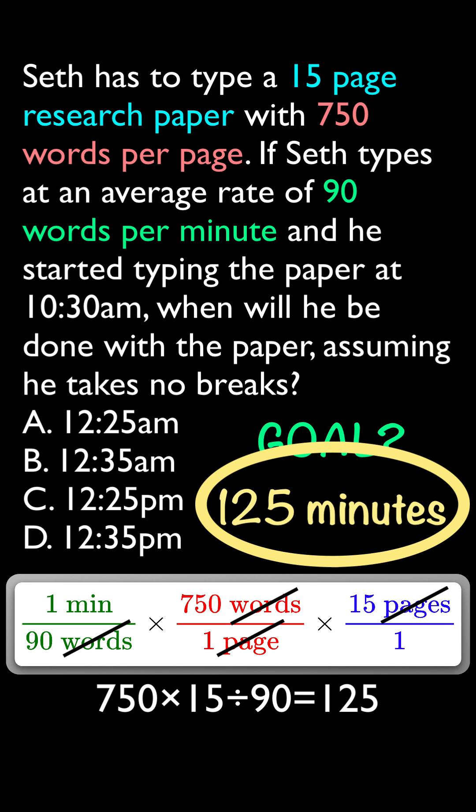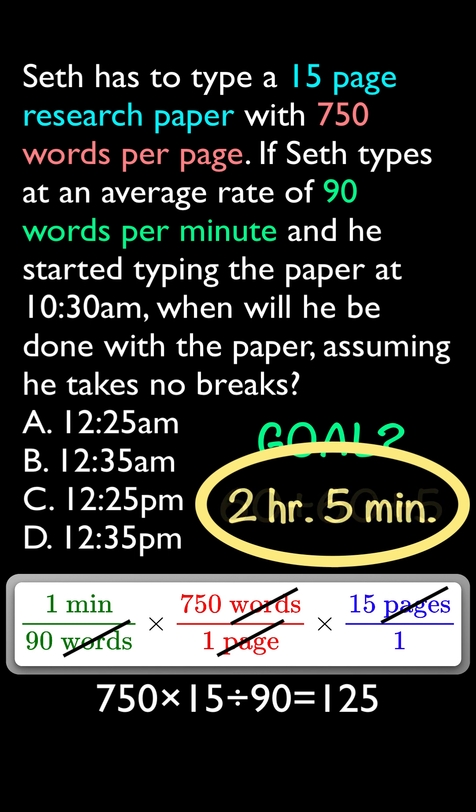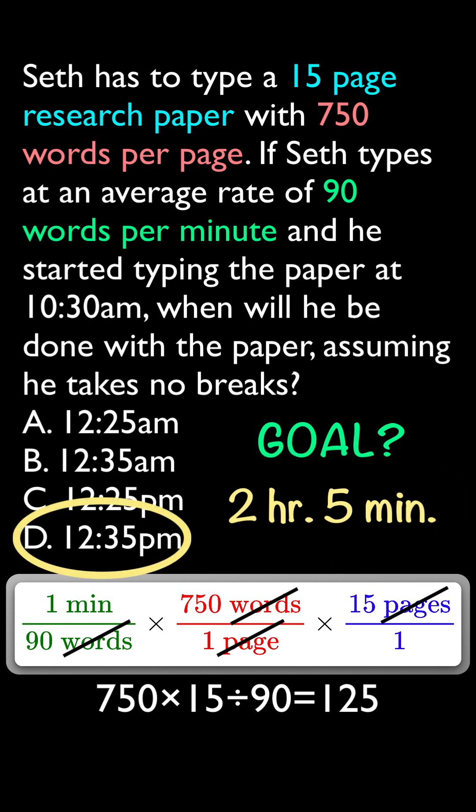I encourage you to check out live session number 11 and watch the other two techniques. I took that 125 minutes and broke it up into 60 minutes plus 60 minutes plus 5 minutes — that's two hours and five minutes. Adding two hours and five minutes to a 10:30 AM start: 11:30, 12:30, then 12:35 — don't forget those extra five minutes. We went from 10:30 AM to 12:35 PM. Our answer is D.